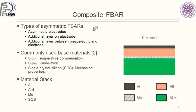This work deals with the second case: a single crystal silicon layer added at the bottom. Our goal is to enhance the mechanical property by achieving a high Q, thus improving oscillator performance. Additional materials that can be added include silicon oxide for temperature compensation, silicon nitride for passivation in sensors, or single crystal silicon as we use here for enhancement of the quality factor.